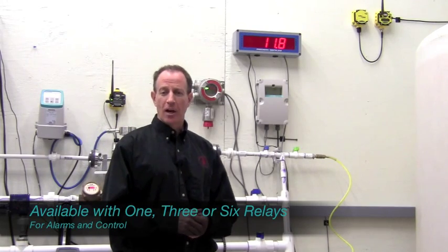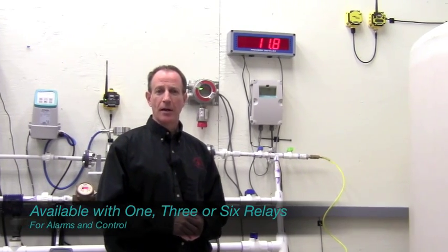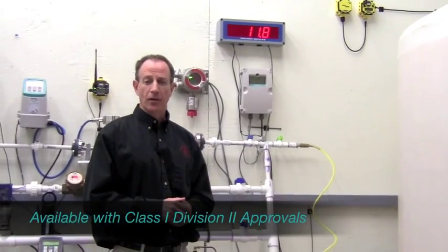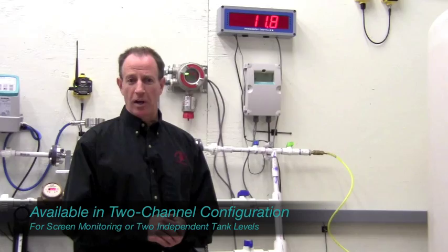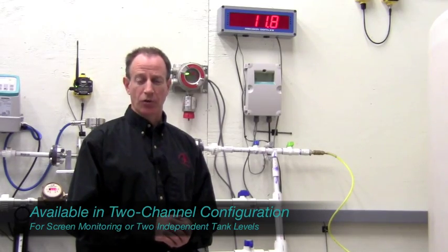The Hydra Ranger is available in models with one, three, or six relays. It's also available with ratings for class one division two. A two-channel Hydra Ranger is available to provide independent indication and control from two sensors.